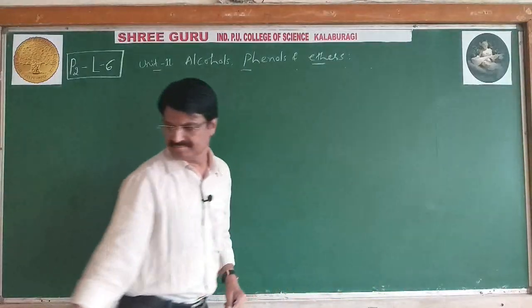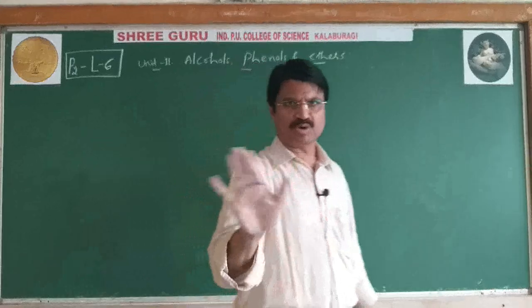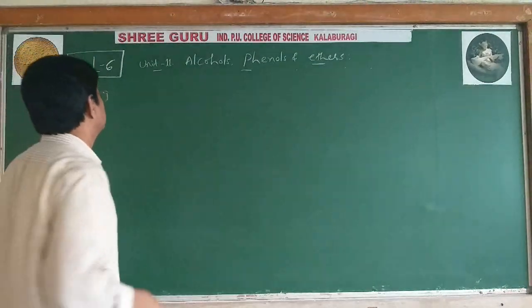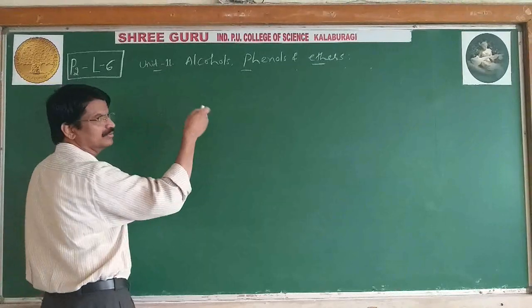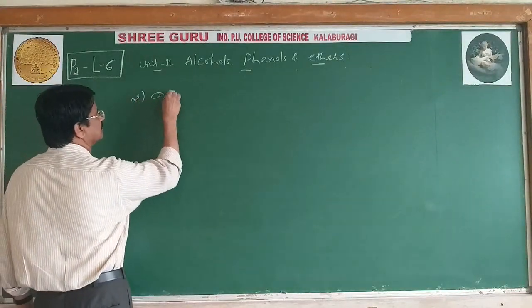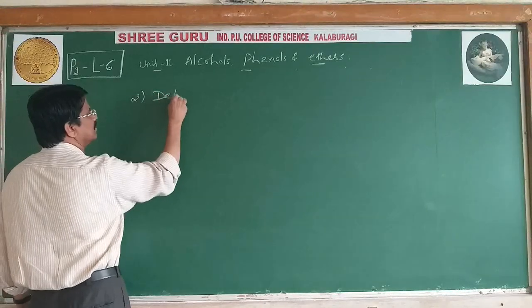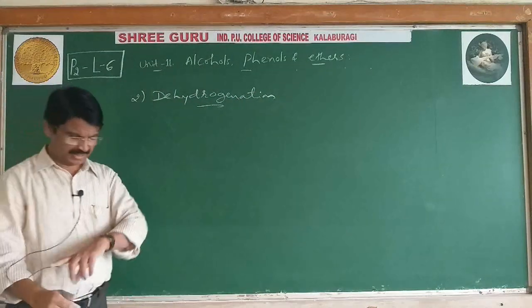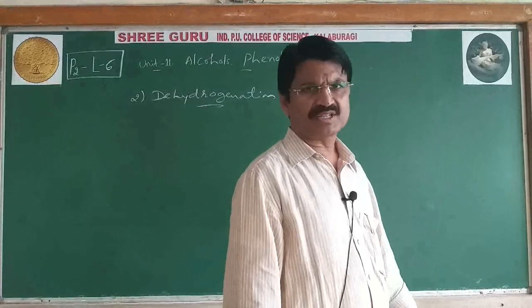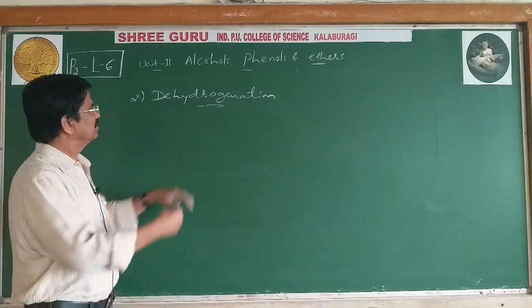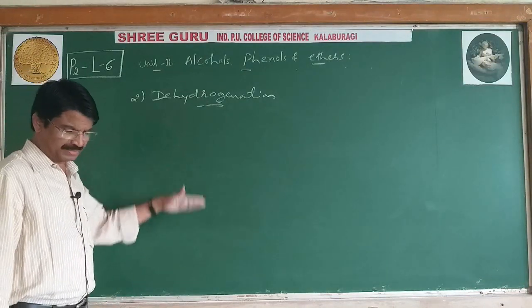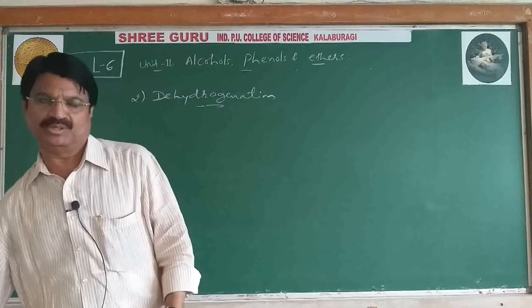Reactions involving cleavage of C-O bond are now complete. The last type involves both C-H and O-H bond cleavage, and one more reaction is oxidation — sorry, dehydrogenation. We will continue dehydrogenation and the remaining reactions and mechanisms in the next class. Thank you.